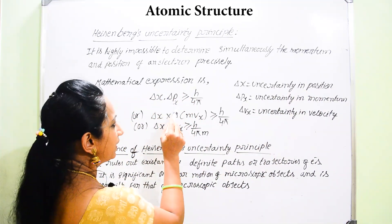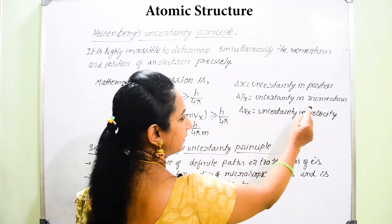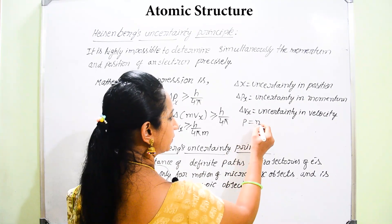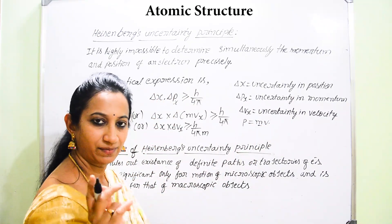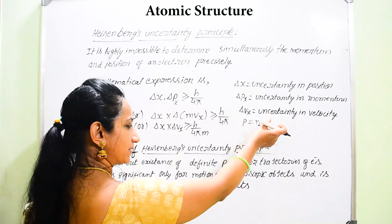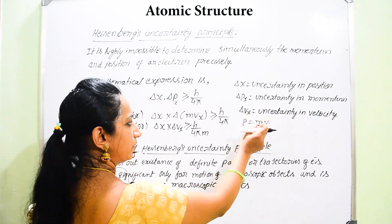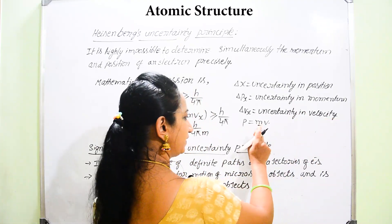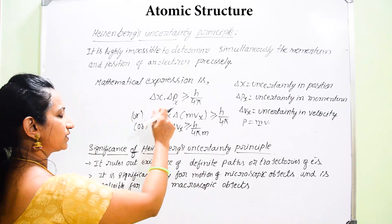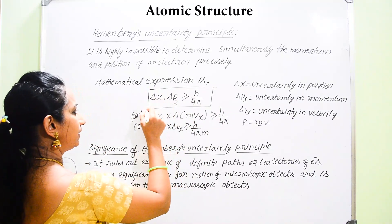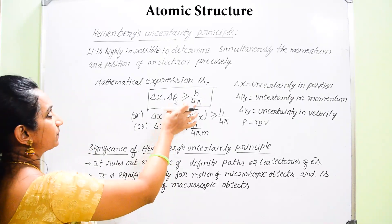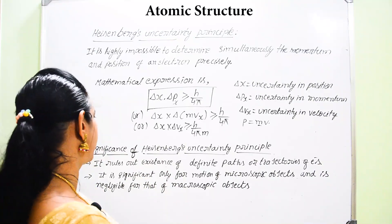Delta px stands for uncertainty in momentum. If we write p equals mv, momentum p is equal to the product of mass and velocity. The electron has a definite mass, so the change is in velocity. The uncertainty in momentum, when mass is considered constant, can be expressed as delta vx, that is, uncertainty in velocity. The important expression to remember for Heisenberg's uncertainty principle is: delta x into delta px is greater than or equal to h by 4 pi.